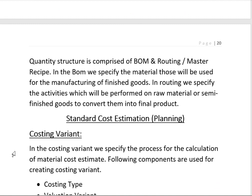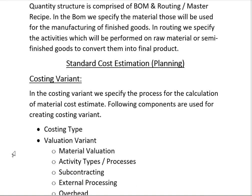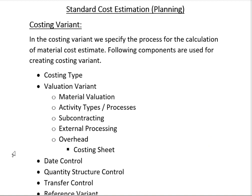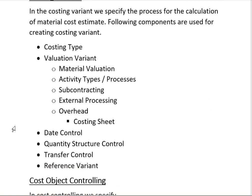For standard cost estimation we calculate the standard cost of all materials. For this we are going to configure the Costing Variant initially. In the Costing Variant we specify the process for the calculation of the material cost estimate. The following components are used for creating a Costing Variant: first is the Costing Type.